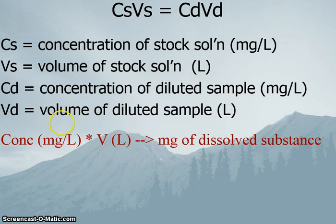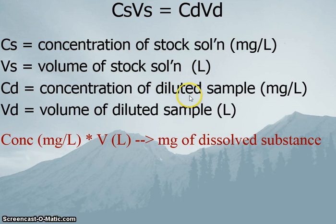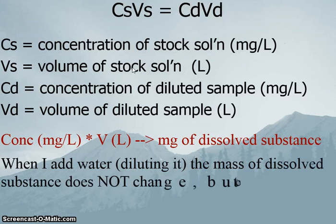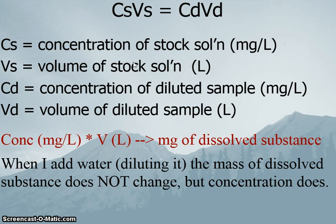That's what we're doing. If we know the concentration of the stock solution, the volume of the stock solution, and how much we diluted it by, we can solve for C sub D — the concentration of the diluted solution. We know the concentration of the stock, the volume of the stock, and the volume of the dilute, so we can calculate the concentration of the dissolved substance. When adding water, the mass of the dissolved substance doesn't change but its concentration does.